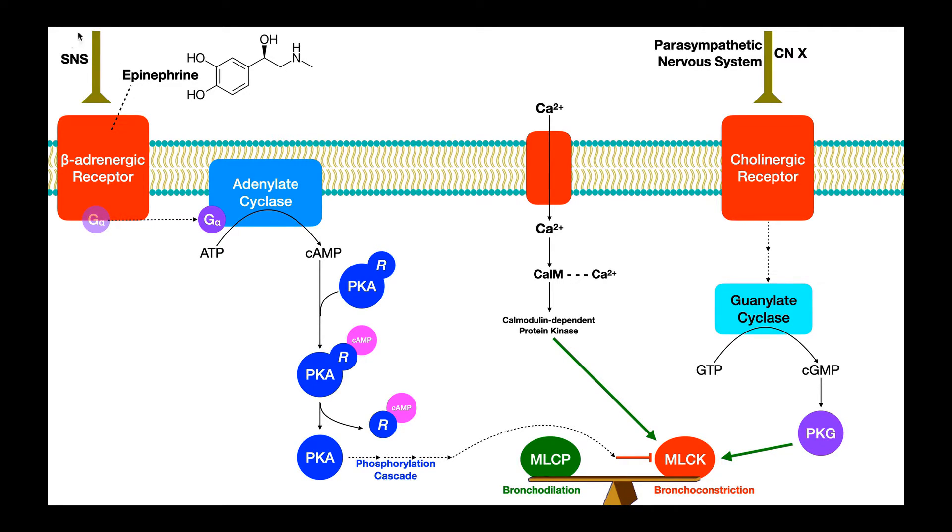Let's first start by talking about the sympathetic response, sympathetic nervous system. That's what this SNS is here for the sake of space. Now the sympathetic nervous system is going to send branches to the bronchioles, and the sympathetic nervous system is going to release norepinephrine from these neurons, and norepinephrine is going to activate these receptors.